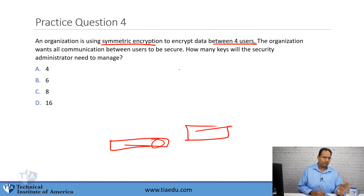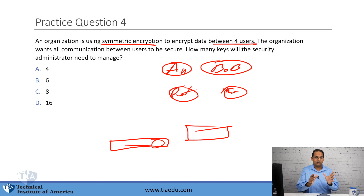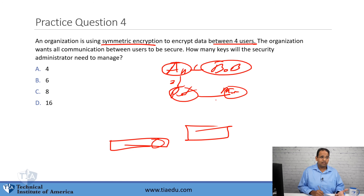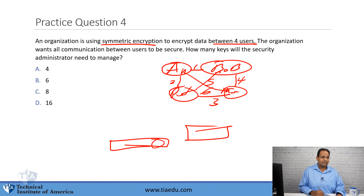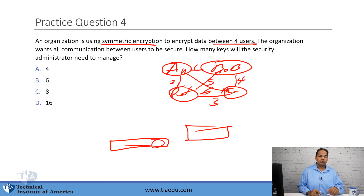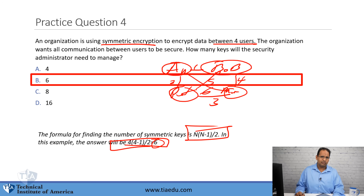Here's a visual explanation. With four users — Andy, Bob, Peter, and Mary — between Andy and Bob you have key 1; Andy and Peter, key 2; Peter and Mary, key 3; Mary and Bob, key 4; Peter and Bob, key 5; Andy and Mary, key 6. That's how you get six keys. Obviously, if you have many users you can't draw this diagram, which is why you use the formula N times (N minus 1) divided by 2. This is a typical formula that may appear on your actual exam.